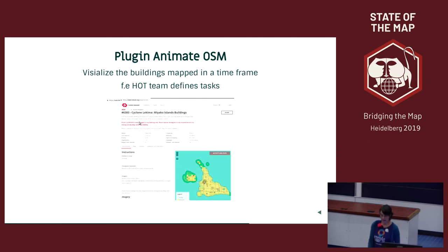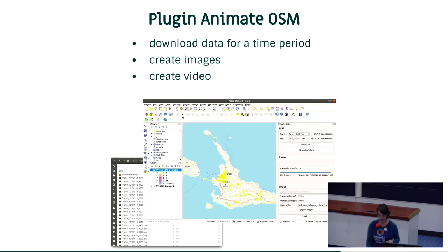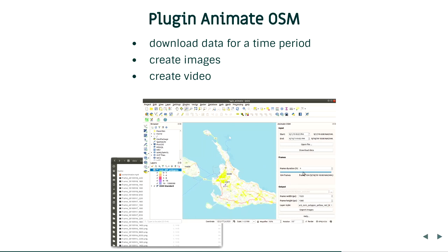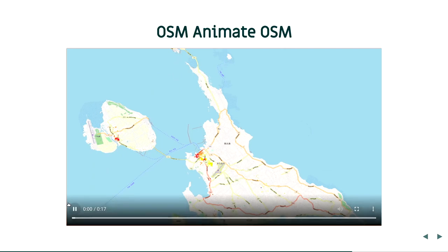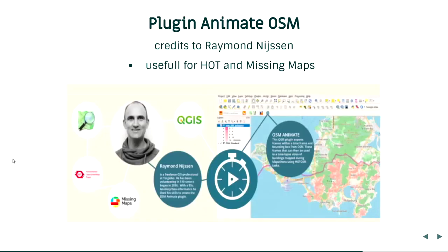There's a nice plugin called Animate OSM, which may be very interesting for HOT teams working on tasks in the HOT Tasking Manager. They can see what happened in a special timeframe. You can go to a location, download data for a special time period by defining a start and end date, process images for that period at defined intervals, and generate a video to easily see what happened in these regions and how a mapping event succeeded. This plugin is by Raymond Neeson, who is quite active in the QGIS community.